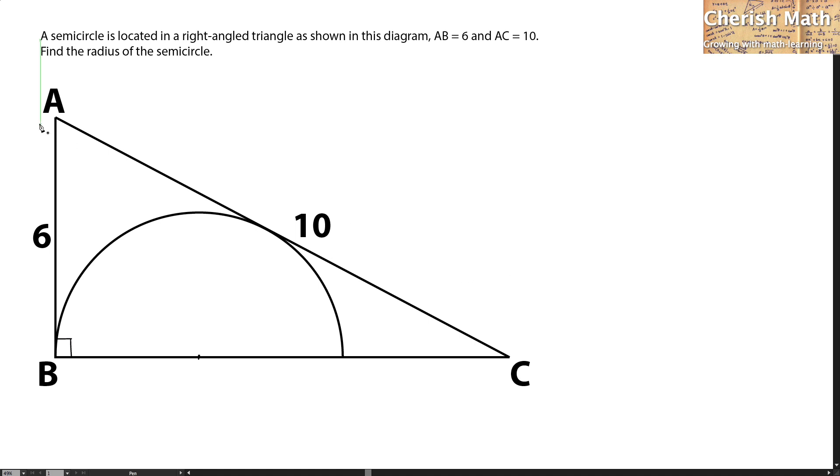To solve the problem, I begin by drawing lines connecting from A to the center of the circle and from the center of the circle to the point of tangent shown here. I'm going to name the center of the circle as O and this point as D.